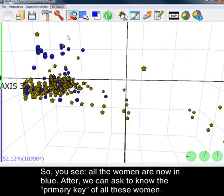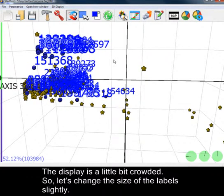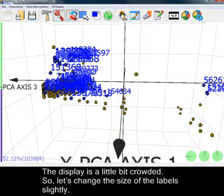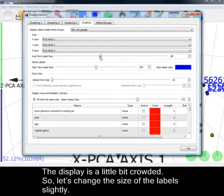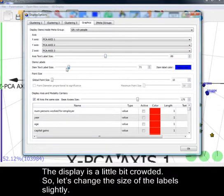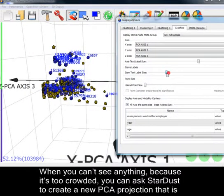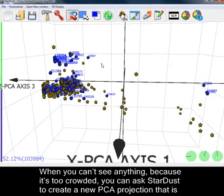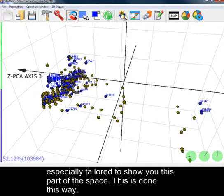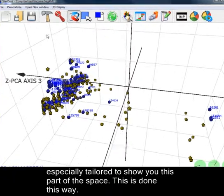After, we can ask to know the primary key of all these women. The display is a little bit crowded. So, let's change the size of the label slightly. But it's still too crowded to see anything. When you can't see anything because it's too crowded, you can ask Stardust to create a new PCA projection that is especially tailored to show you this part of the space. This is done this way.